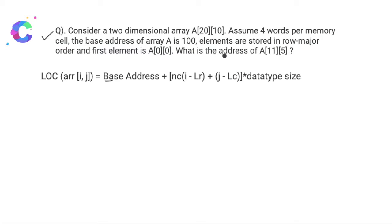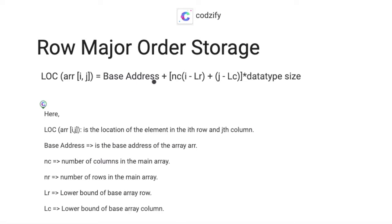Many times you get questions like how to calculate the address using row major order and column major order. Here I have a formula for row major order. LOC of A[i][j] is the address of a specific element, where i denotes the row and j denotes the column. Base address is the base address of the array. NC denotes the number of columns in the main array.